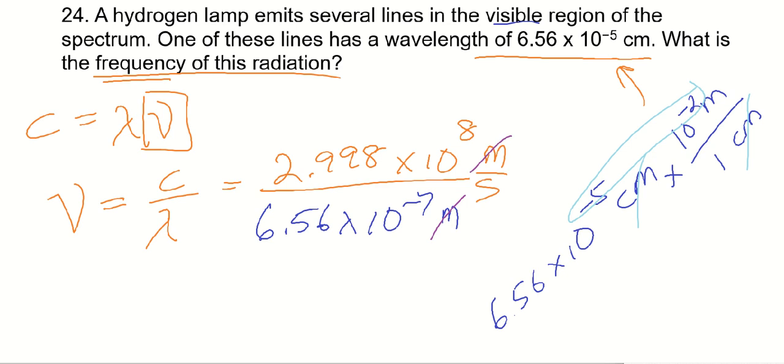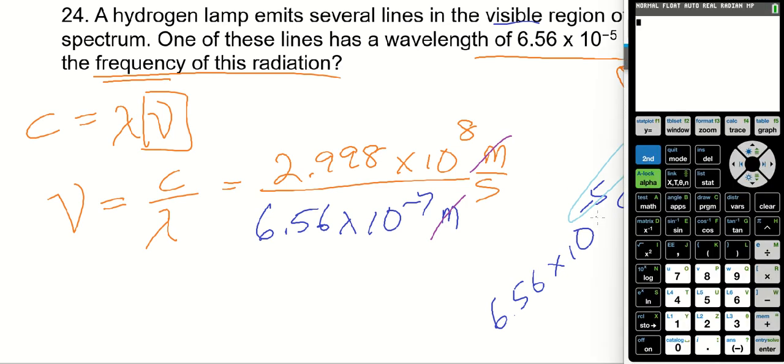We're left with units of per second, which is the unit of frequency. Let's go to our calculator. 2.998 times 10 to the 8, divided by 6.56 times 10 to the negative 7.